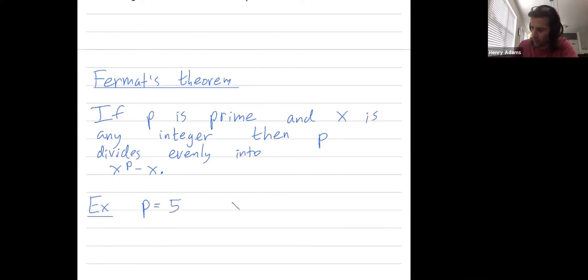Okay, why don't I take X to be 4? So let's compute 4 to the 5th power. So X to the Pth power is 4 to the 5th power. 4 to the 5th power is 1,024. And then I just subtract X, so I subtract 4, and I get 1,020. And we can see that 5 divides into 1,020.